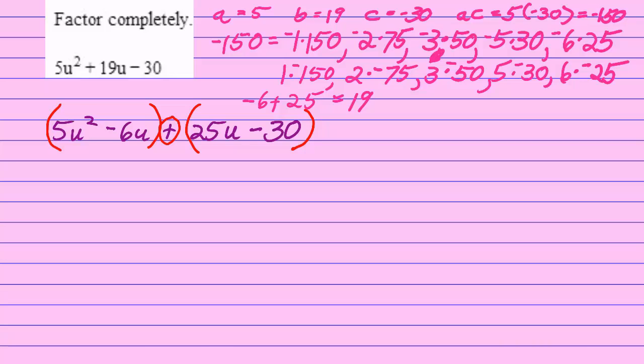Don't forget to write the middle sign. Now, looking back at the first two terms, the first set of parentheses, the only thing that those two terms have in common is a u. 5 and 6 don't have any factors in common, so u is it. U is the common factor, the greatest common factor of the first two terms.